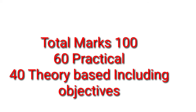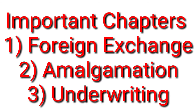Now, let's talk about chapters — which chapters to focus on and which to ignore. First, we have 3 important chapters that you need to read first. Number 1 is Foreign Currency Transactions, that is Foreign Exchange — Accounting Standard 11. Number 2 is Amalgamation. And Number 3 is Underwriting. You have to focus on these 3 chapters first.